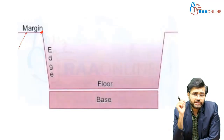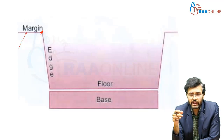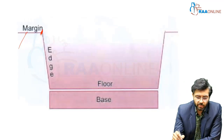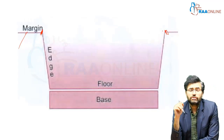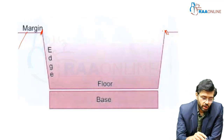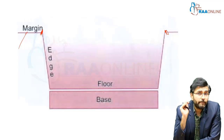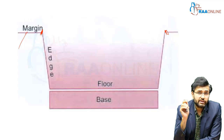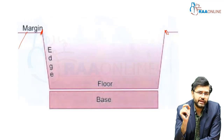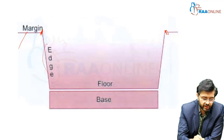The margin is basically the junction between the ulcerated area and the normal skin, and it can be regular or irregular. What we see is the floor of the ulcer, and beneath the floor is the base of the ulcer. The base is palpated but not seen, whereas the floor of an ulcer is seen. In between the margin and the floor, we have the edge of an ulcer.